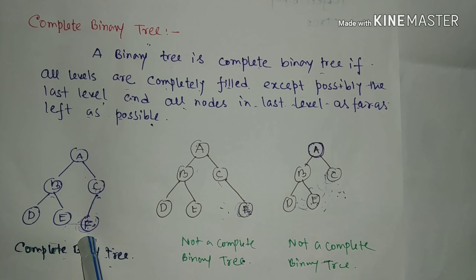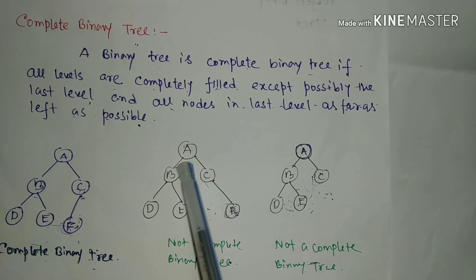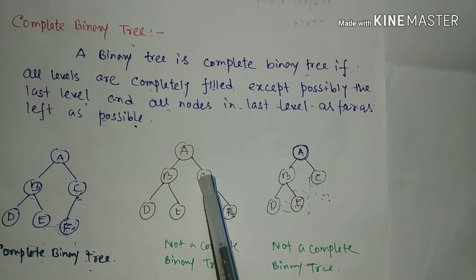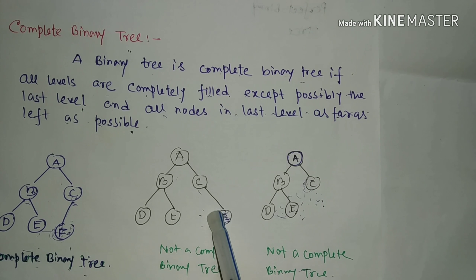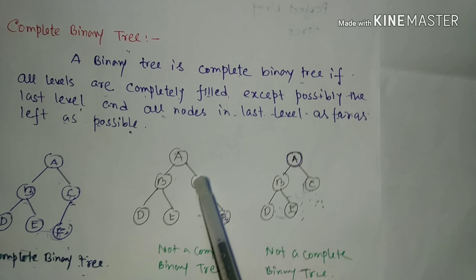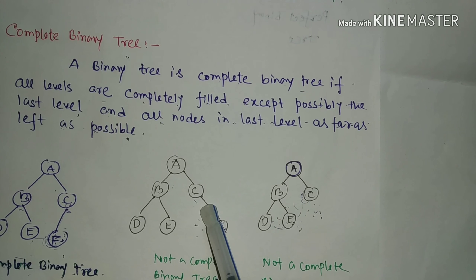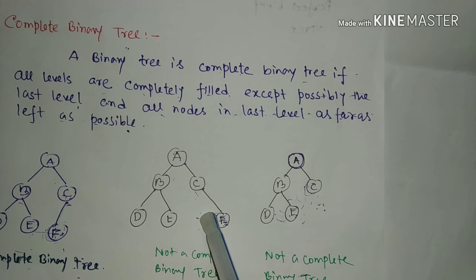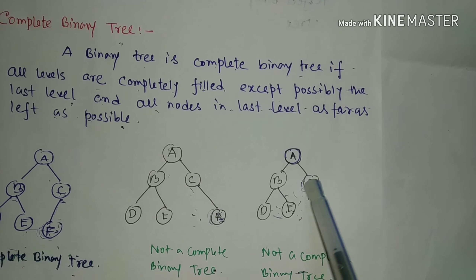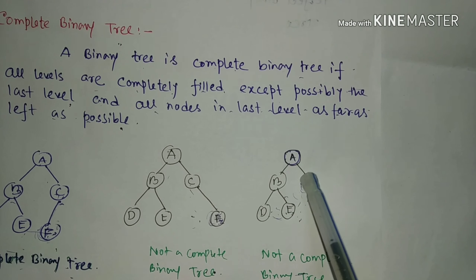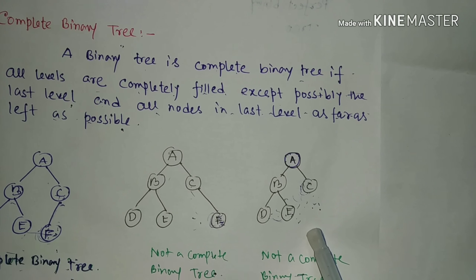This other tree is not a complete binary tree because all levels are completely filled except the last level, but the node in the last level is on the right, not on the left. If that node were on the left, it would be a complete binary tree. This third tree is also not a complete binary tree because all the levels are not completely filled — these levels are not filled.